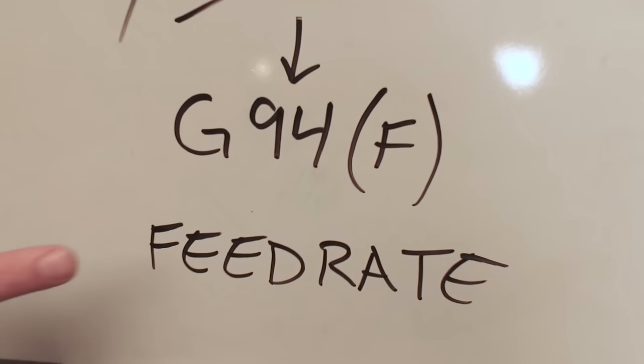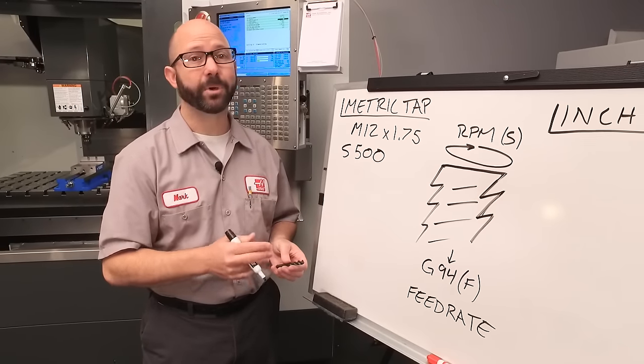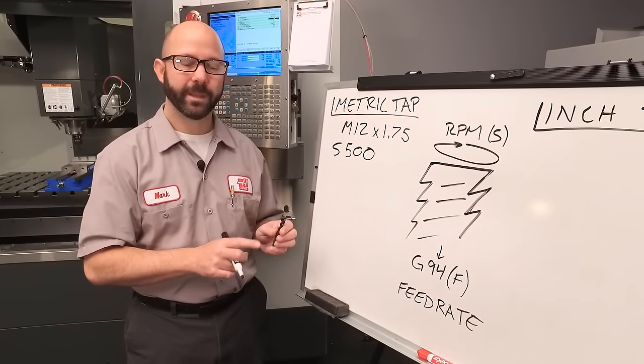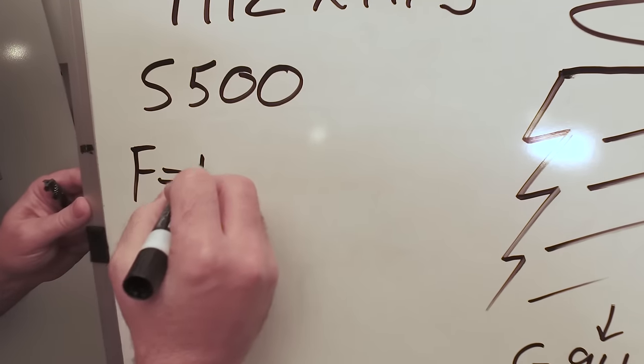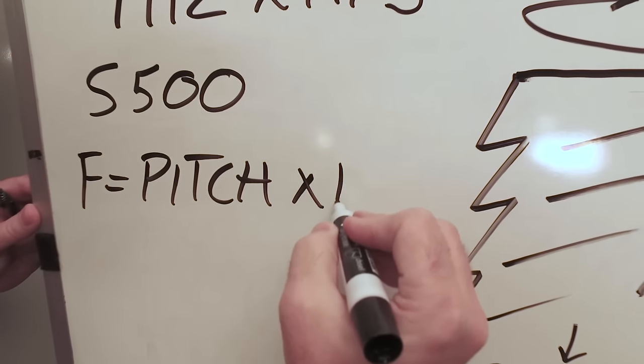Now the second piece to our puzzle is our feed rate, our F value. For this, we need to put on our thinking caps. It's not too hard because we've got a formula. Now for a metric tap on a machine in metric mode, F equals pitch times RPM.